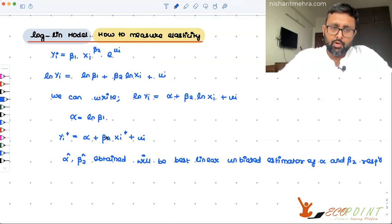How do you interpret this beta 2? Since all of this is in log log form, the coefficient of beta 2 is going to measure what? If there is a 1% change in xi, how much is the change in yi? It is measuring percentage change in yi for percentage change in xi.